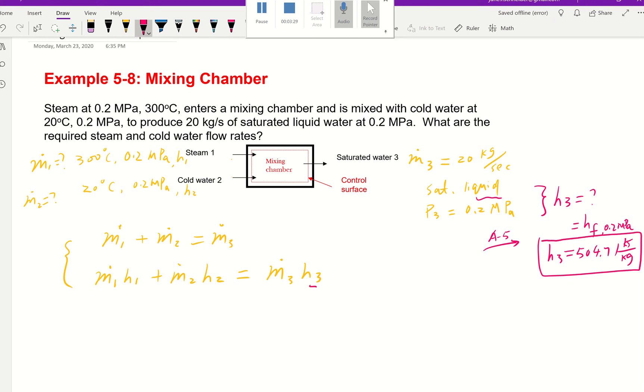So h₃ is known now. Is there any way we can find h₁ and h₂? Let's go ahead and solve for h₁. For the steam, we also know two properties: we know the temperature and we also know the pressure.